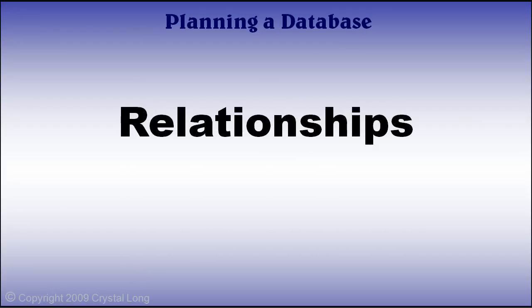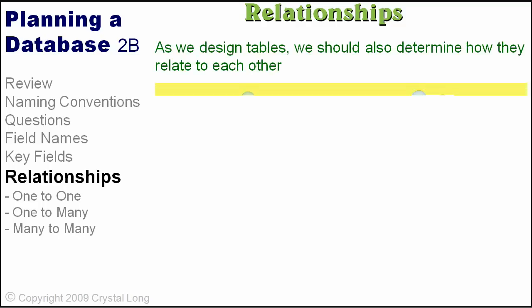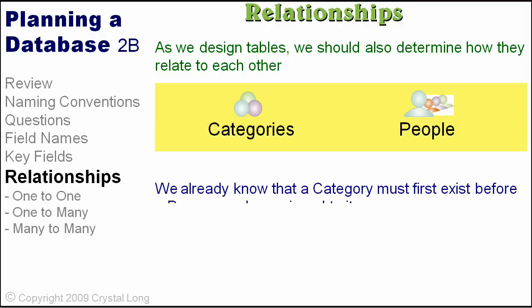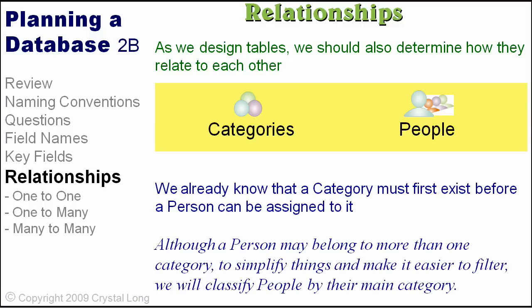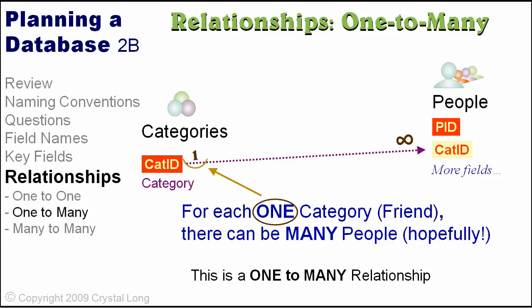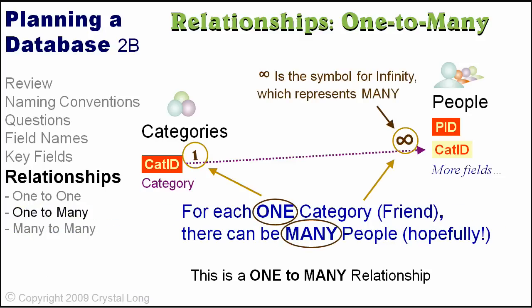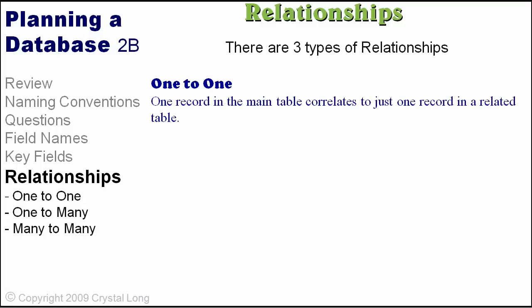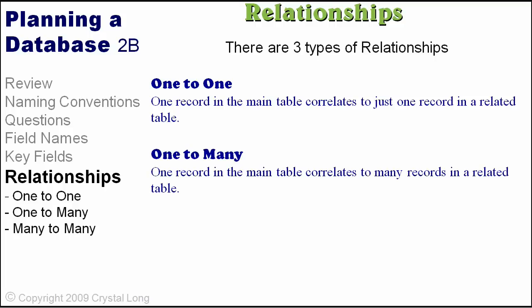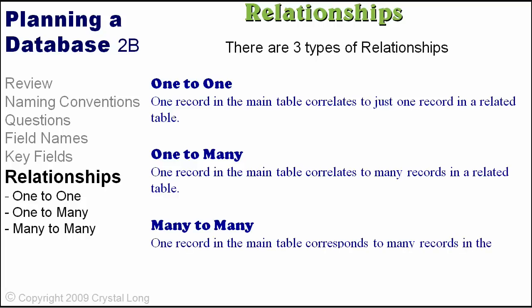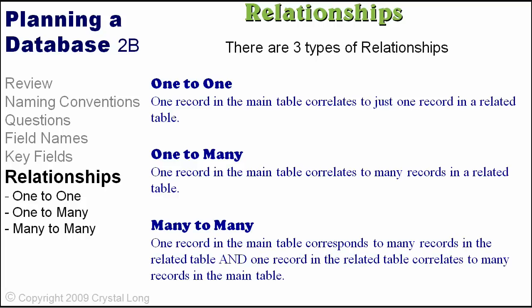As we design tables, we should also determine how they relate to each other. We already know that a category must first exist before a person can be assigned to it. The most common type of relationship is a one-to-many relationship — for each one category such as friend, there can be many people. There are three types of relationships: a one-to-one relationship is when one record in the main table correlates to just one record in a related table; a one-to-many is when one record correlates to many; and a many-to-many is when one record in the main table corresponds to many records in the related table, and one record in the related table correlates to many records in the main table.